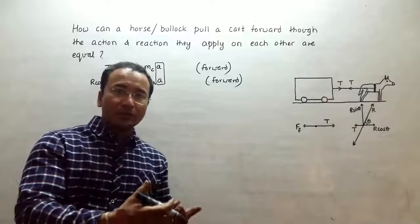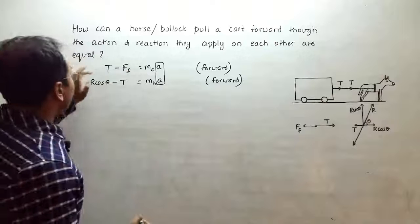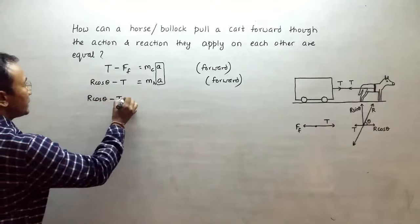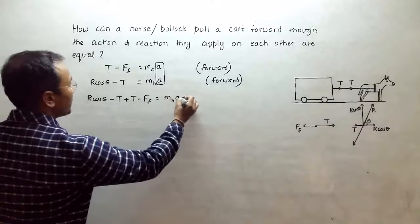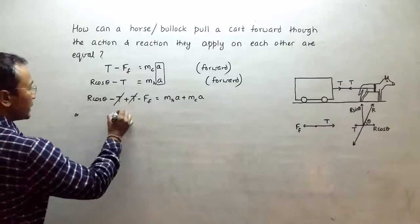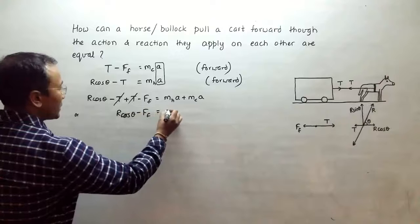So if you add these two equations, I will have R cos theta minus T plus T minus FF will be equal to mH·a plus mC·a, which gives us, if I cancel this T and T, R cos theta minus FF will be equal to (mH plus mC)·a.